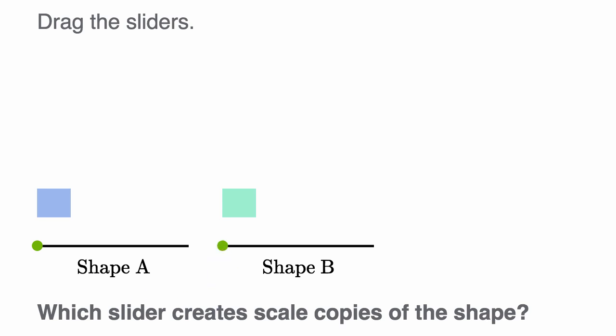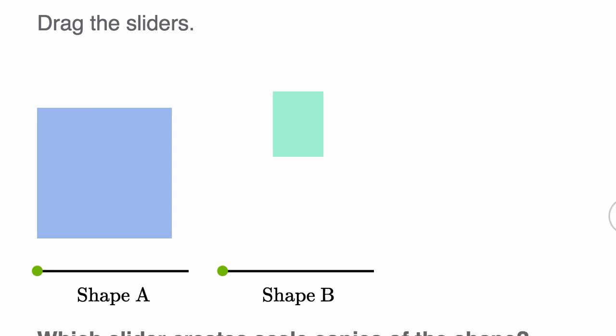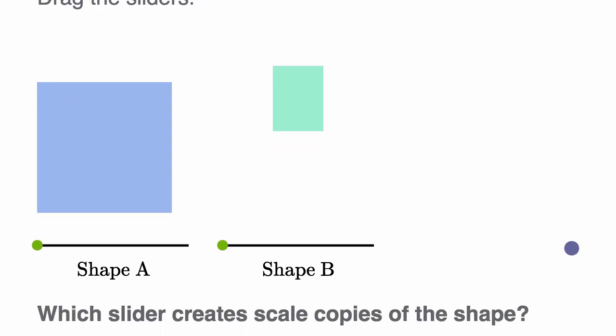Let's do another example. So once again, they say drag the sliders, and they say which slider creates a scaled copy of the shape?